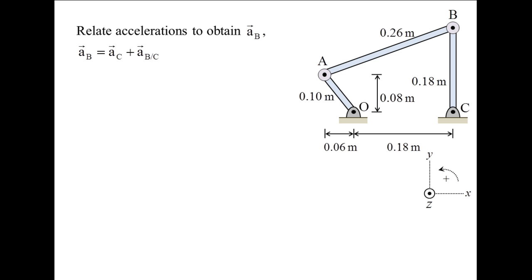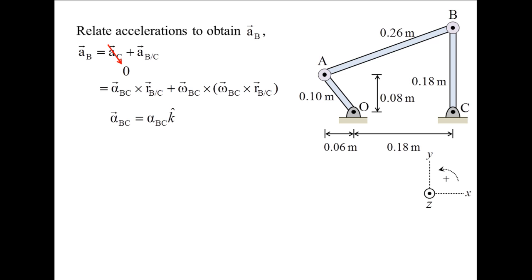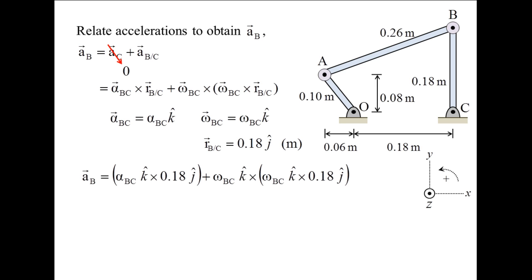The acceleration of point B is obtained by relating the acceleration of points B and C. The acceleration of point B is equal to the acceleration of point C plus the acceleration of point B relative to point C. The acceleration of point C is zero since it is fixed. The relative acceleration term is decomposed into tangential and normal components. The tangential component is the angular acceleration of link BC cross RBC, and the normal component is omega BC cross the quantity omega BC cross RBC. The angular acceleration vector for link BC has the magnitude of alpha BC and points in the z direction. Evaluating the cross product gives us the acceleration of point B.